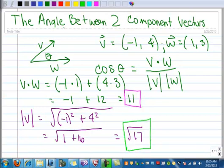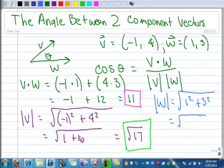And now let's do the magnitude of w. That's the square root of one squared plus three squared. So that's the square root of one plus nine, which is the square root of ten. Let's box that one in too.